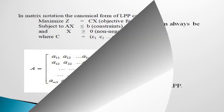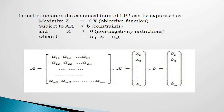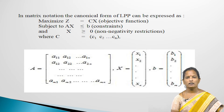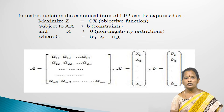In matrix notation, the canonical form of LPP can be expressed as: maximize Z equal to Cx (objective function), subject to AX less than or equal to B (constraint), and X greater than or equal to 0 (non-negativity restriction). Here C is the row matrix [c1, c2, ..., cn], A is the m×n matrix with elements a11, a12, ..., amn, X is the column matrix [x1, x2, ..., xn], and B is the column matrix [b1, b2, ..., bm].